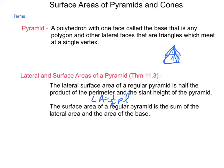The surface area of a regular pyramid is the sum of the lateral area and the area of the base. So our surface area is that lateral area plus the base. However you calculate the shape or the area of that base shape, add it to the lateral area.